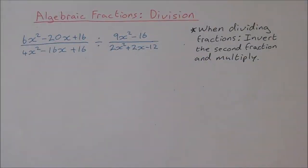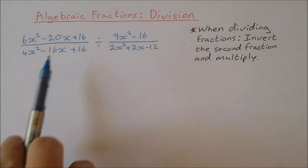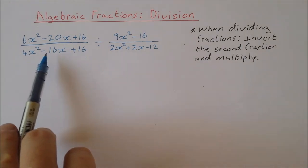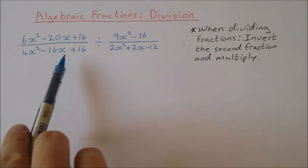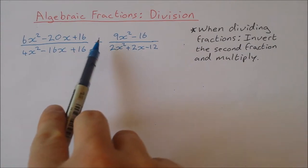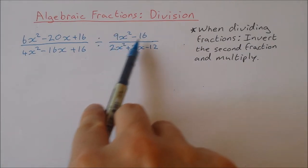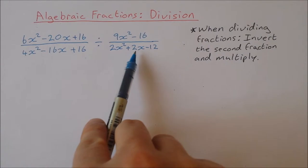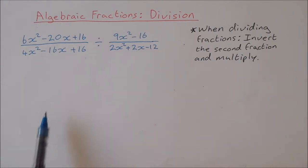In this video I'm going to take a look at dividing algebraic fractions. I have a fraction here: 6x squared minus 20x plus 16 over 4x squared minus 16x plus 16, and it's divided by 9x squared minus 16 over 2x squared plus 2x minus 12.